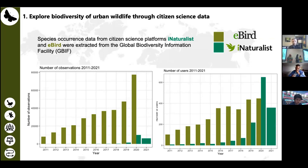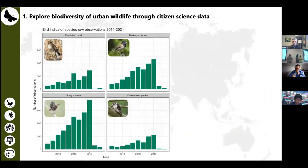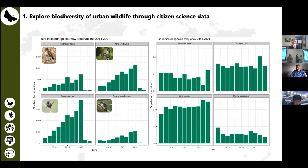We are also able to look further into this occurrence data by investigating observations for important bird species called indicator species. We can plot raw observations over time, and it looks like all of these populations are increasing. However, we don't know for sure if this is a result of population increase, or if there are just more people using the app — more people seeing birds doesn't necessarily mean there are more birds. We can correct for this by looking at the frequency of observations for each species — the proportion of total observations each species accounts for — which shows that some species show increases like the song sparrow, some a decrease like the downy woodpecker, and some stay about the same.